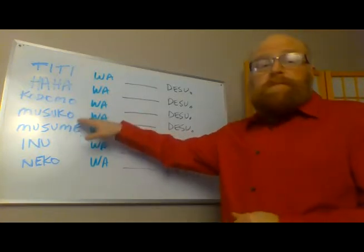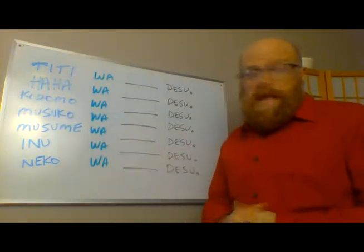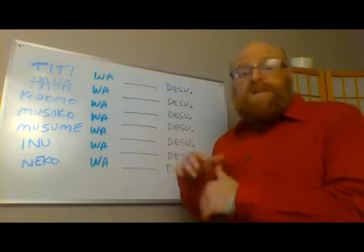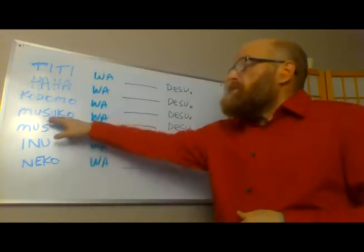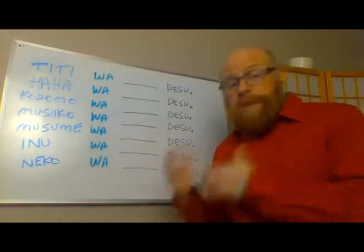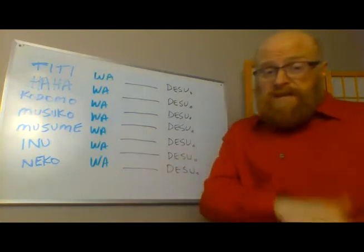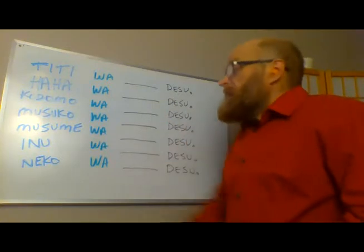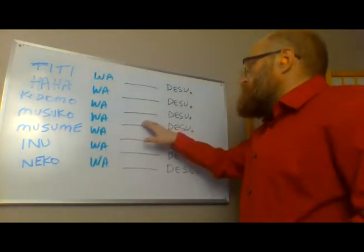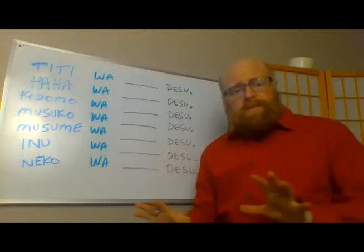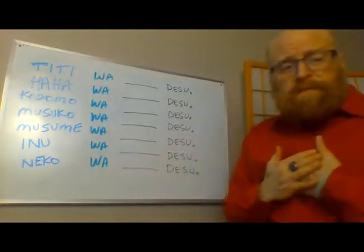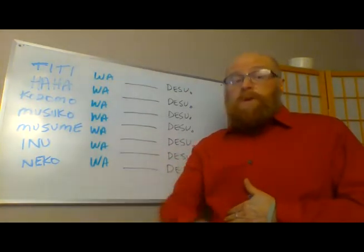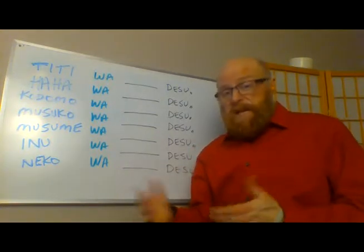Next we have a different version of Kodomo — Musuko. The suffix ko on the end of just about anything relating to children or names literally means child, but Musuko implies a male child. So Musuko wa Kota desu — your male child's name is Kota. Notice I'm not putting any san or honorifics on my own family's names. If I was talking about someone else's family, I would always add the honorific san to be polite.